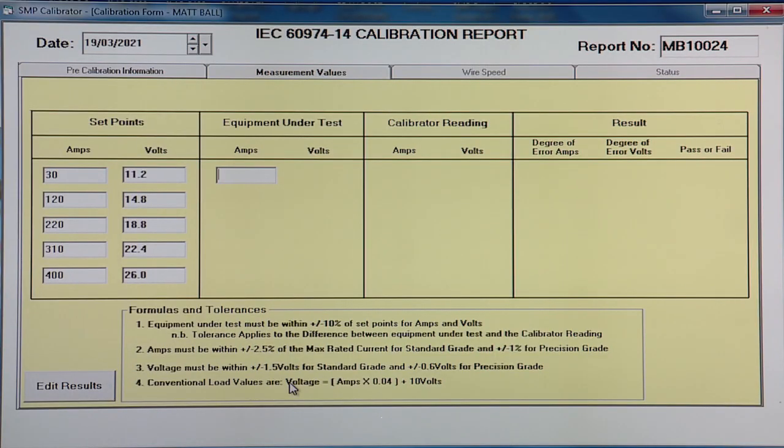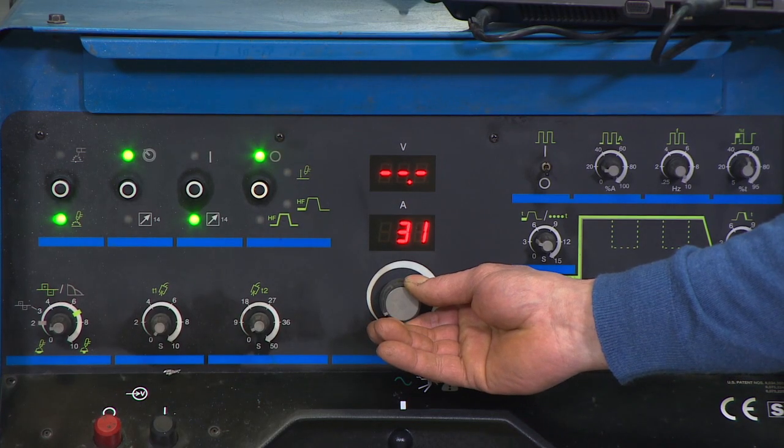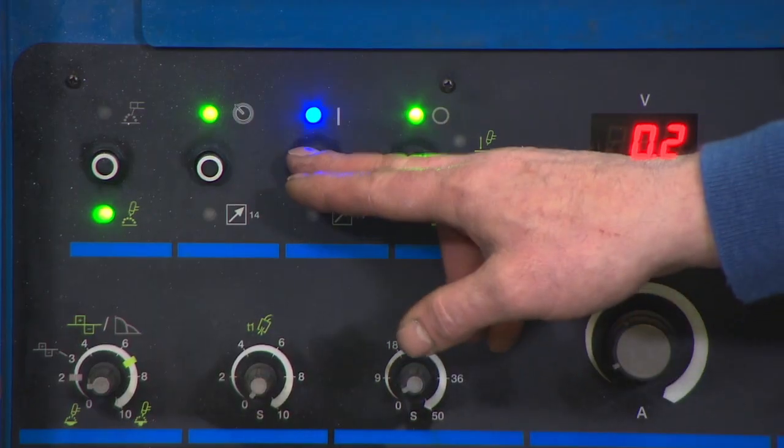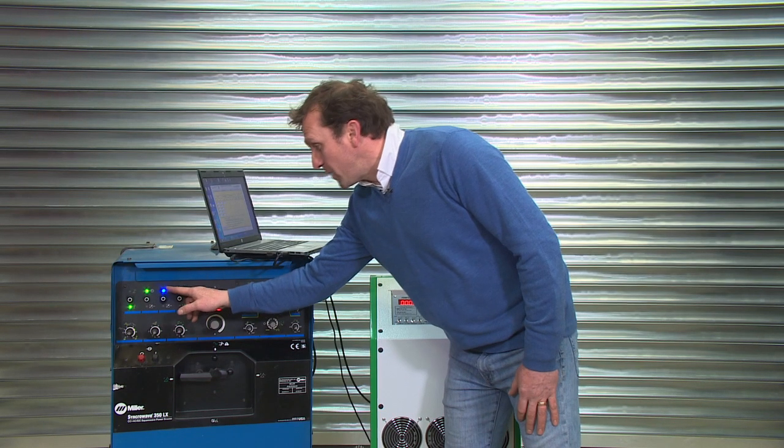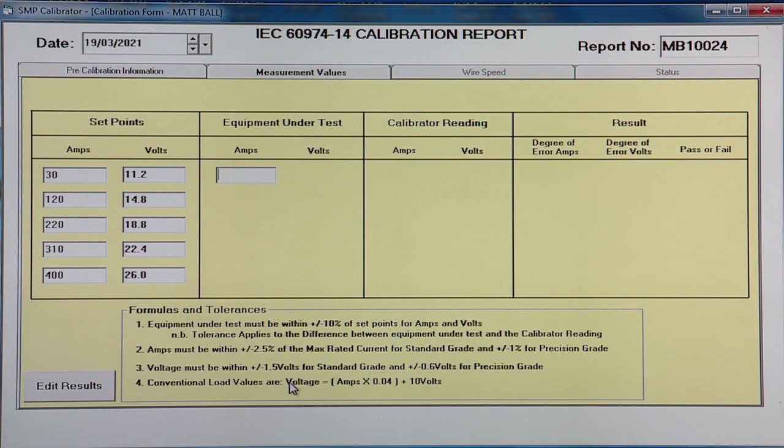Our first reading, our minimum reading, is 30 amps and 11.2 volts. So we set the amps at our first reading, 30 amps. We'll then energize the machine, turn it on, either from the front panel or using the TIG torch trigger. We're then going to load the welder to 30 amps, 11.2 volts within that 10% margin.